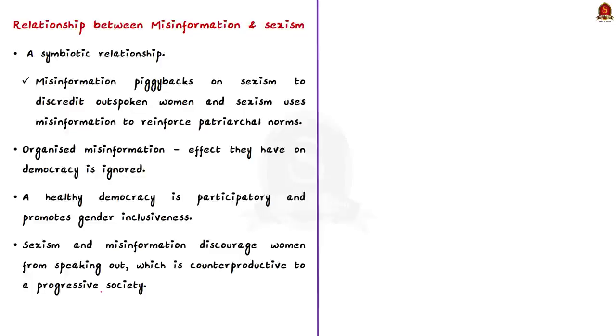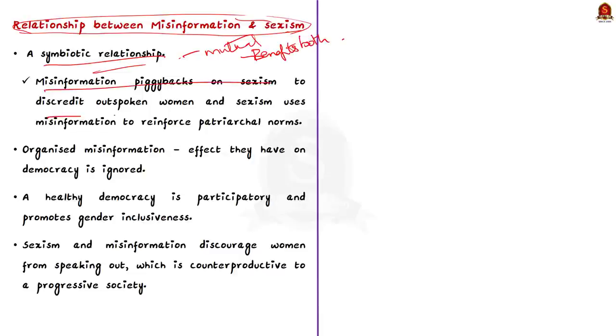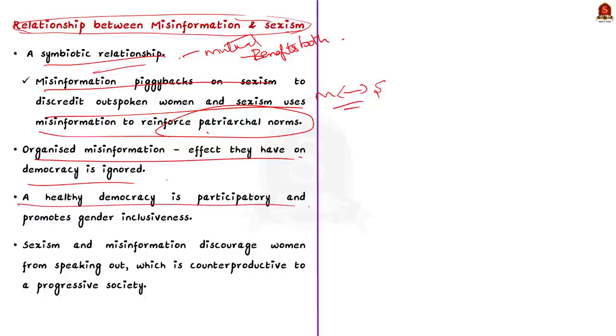And the second most important thing mentioned in the article is the relationship between misinformation and sexism. See misinformation and sexism have a symbiotic relationship. Symbiotic is nothing but a mutual relationship between any two entities which benefits both of them. For example misinformation uses sexism to discredit outspoken women and sexism uses misinformation to reinforce patriarchal norms. While organized misinformation and trolling affect women on a personal level, the issue that is often ignored is the effect they have on democracy. A healthy democracy is participatory and promotes gender inclusiveness. And the sexism and misinformation discourage women from speaking out which is counterproductive to a progressing society like India.